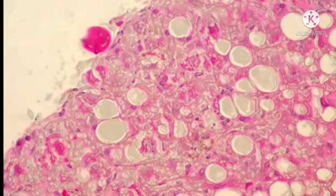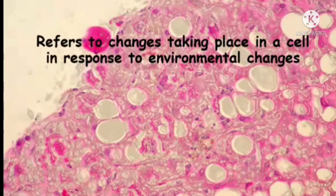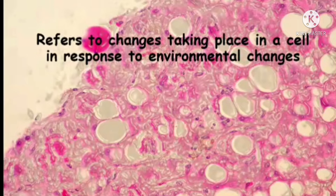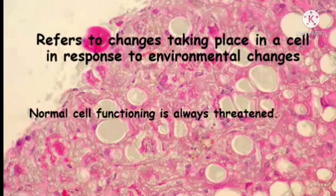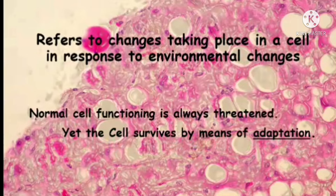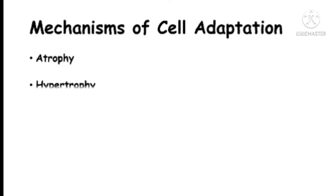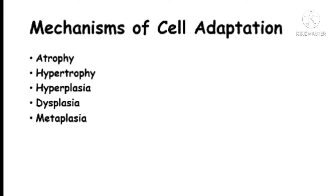In this video we are going to talk about cell adaptation. Cell adaptation refers to changes taking place in a cell in response to environmental changes. Normal functioning of the cell is always threatened by various factors such as stress and chemical agents, yet the cell survives and continues to function by means of adaptation. The mechanisms of cell adaptation include atrophy, hypertrophy, hyperplasia, dysplasia, metaplasia, and neoplasm.